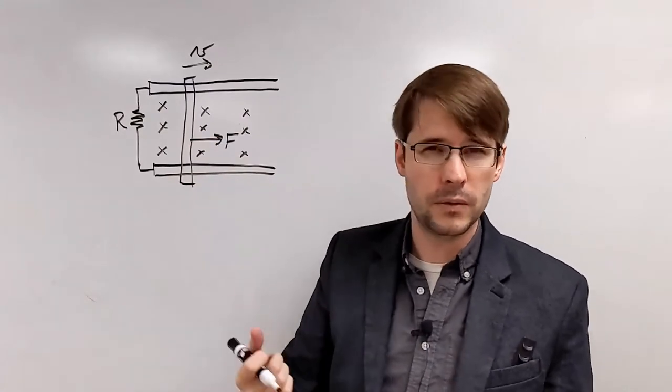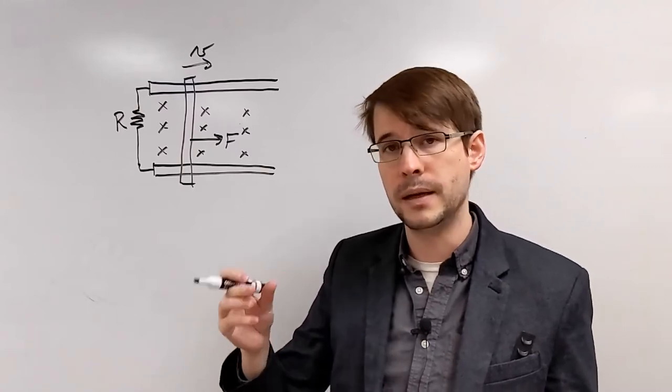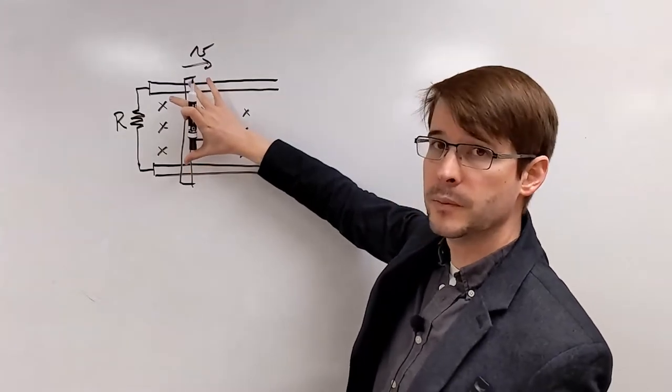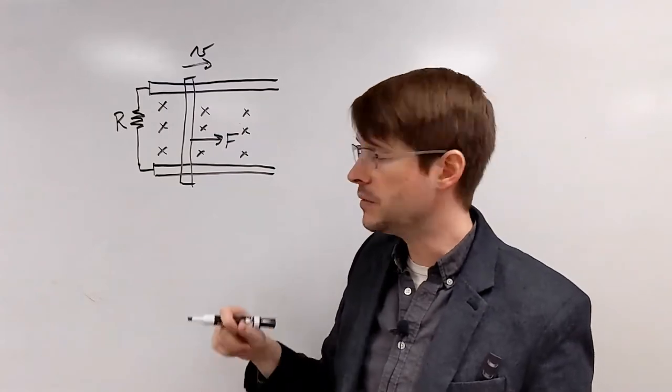So what we derived before was that the EMF was equal to BLV, the magnetic field times the length of bar that is inside of the magnetic field, which in this case would be the spacing between the two bars, times the velocity.